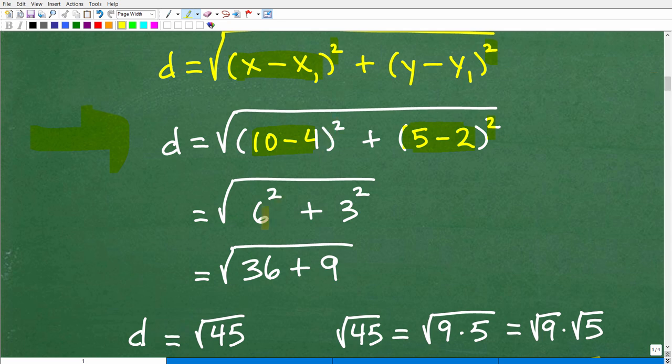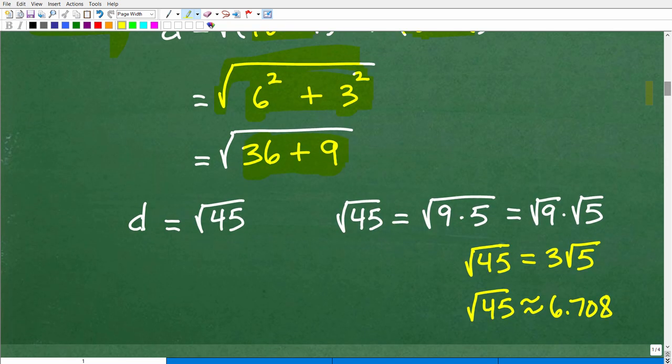All right, so 10 minus 4 squared, that's going to be 6 squared. 5 minus 2 is 3. And we're going to square that. So, we're down to the square root of 6 squared plus 3 squared. We've got to figure this out here. So, 6 squared is 6 times 6, which is 36. 3 squared is 3 times 3, which is 9. So, we have the square root of 36 plus 9. And, of course, that is the square root of 45.